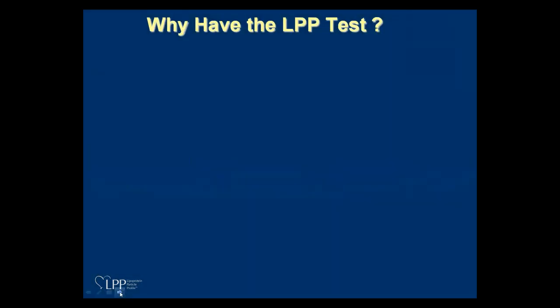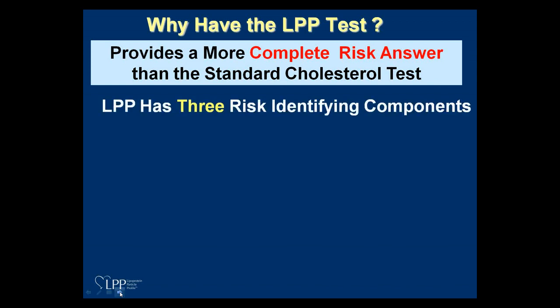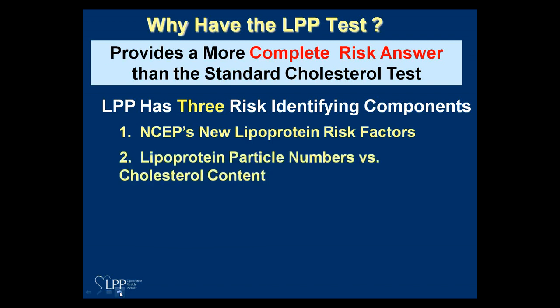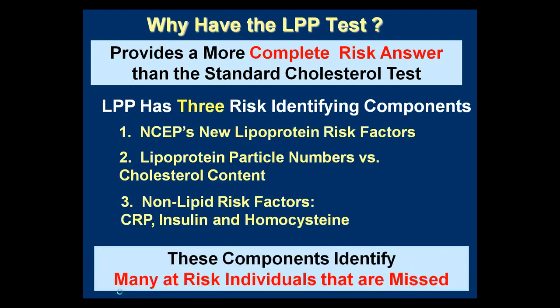Why do we need an LPP test? We need a more complete answer — after all, 50% of those who have died of a heart attack were unidentified as being at risk. The LPP has three additional risk-identifying components: it measures lipoprotein particle numbers including the new risk factors, and in the LPP Plus we measure CRP, insulin, and homocysteine — all giving us a more complete picture and identifying many more people at risk.